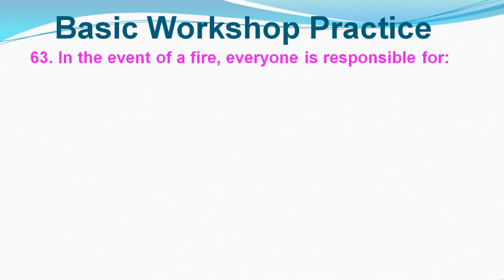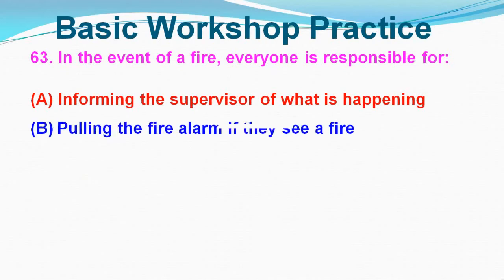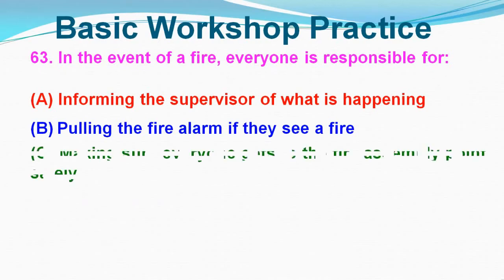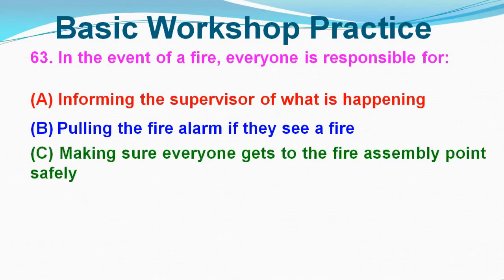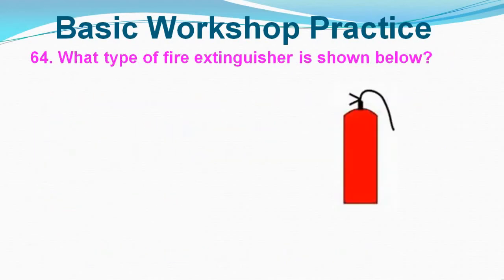Question No. 63: In the event of a fire, everyone is responsible for which of the following? Option A: Informing the supervisor, Option B: Pulling the fire alarm if they see a fire, Option C: Making sure everyone gets to the fire assembly point safely, Option D: None of the above. Correct answer is Option B, Pulling the fire alarm if they see a fire.